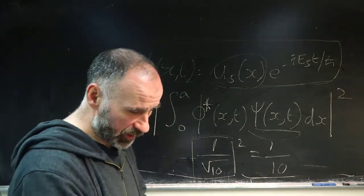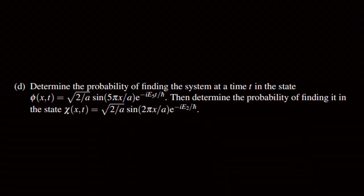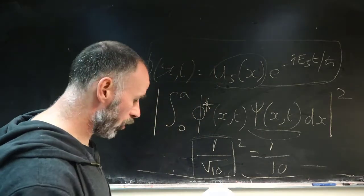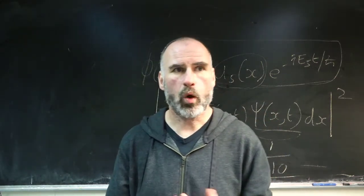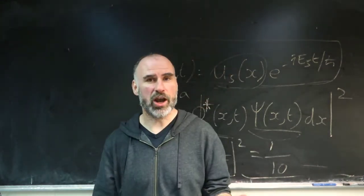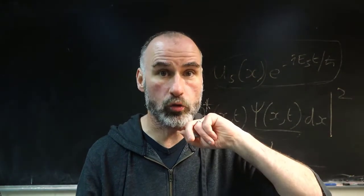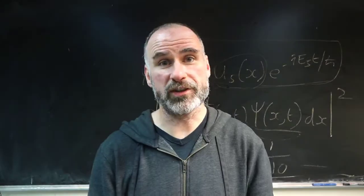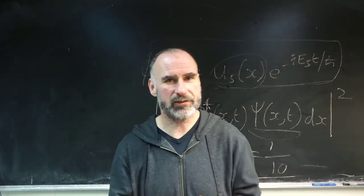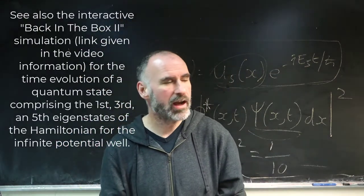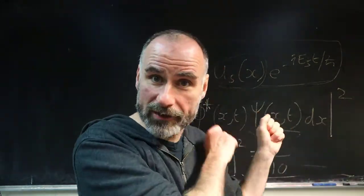For the final question: determine the probability of finding the system in the state chi(x,t) — which is the second energy eigenstate. Our overall wave function contains the first, third, and fifth energy eigenstates. What is the probability of measuring the second energy eigenstate? It's zero — it's not in the mix. U2, the second eigenfunction, isn't there. Therefore the probability of measuring that state at any time is zero. Let's see that in terms of a simulation — I'm going to modify a previous simulation called 'the particle in a box is not simple.'